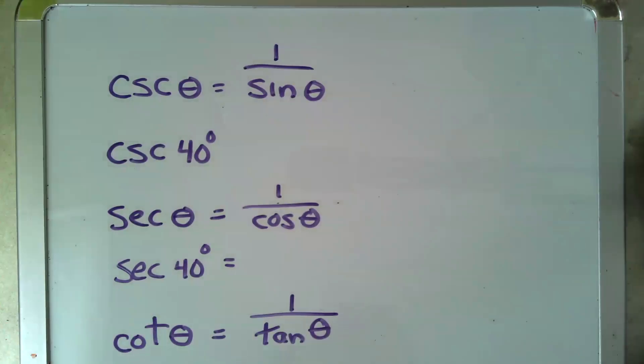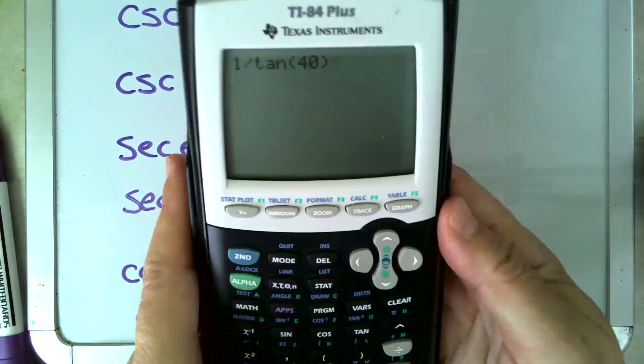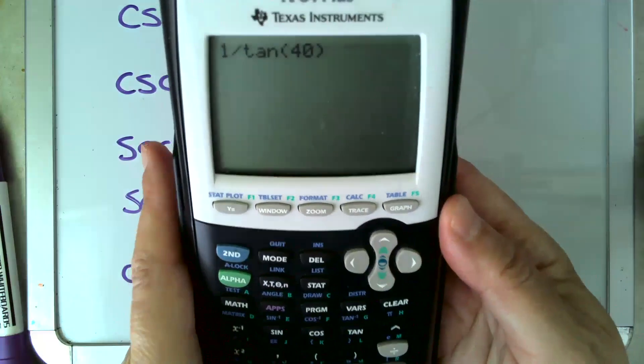And cotangent is defined as 1 over tangent, so cotangent of 40 would be 1 divided by the tangent of 40. Boom.